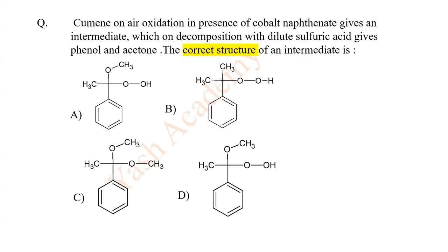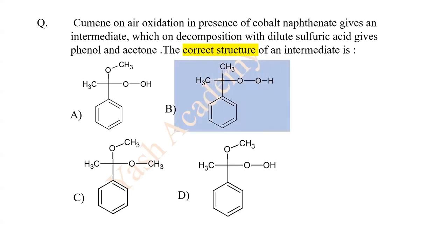Cumene on air oxidation in the presence of cobalt naphthenate gives an intermediate, which on decomposition with dilute sulphuric acid gives phenol and acetone. The correct structure of the intermediate is — answer B.